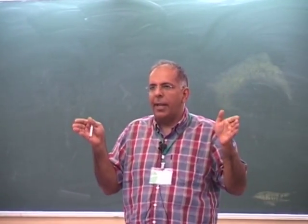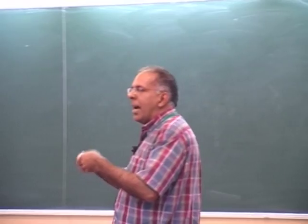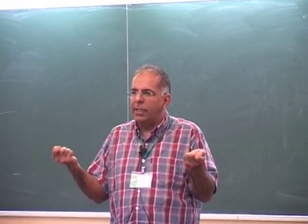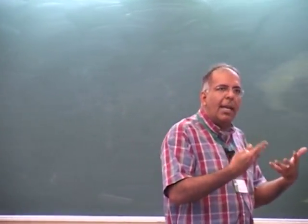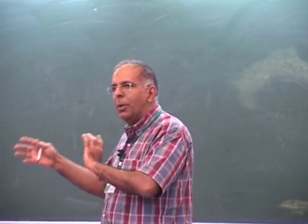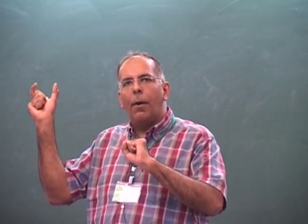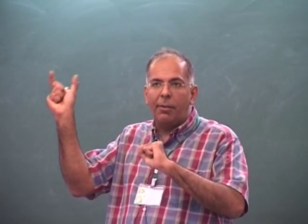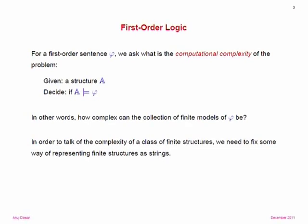Of course, that assumes that the structure is finite. There are infinite structures which have finite descriptions, and that's the sort of thing one's interested in when going beyond finite model theory — doing this for structures where A is not necessarily finite but has a finite description. But that's a completely different problem and won't occur in my talk. I'm assuming that the structure A is finite and given by some encoding like in Ramanujam's talk.